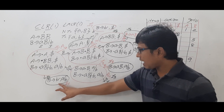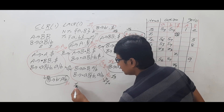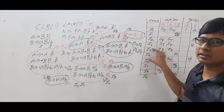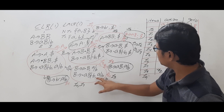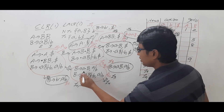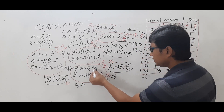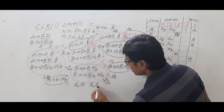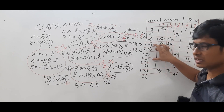Looking at these LR(1) items, I4 and I7 have the same production but different lookaheads — that is why we took two entries in the CLR(1) parsing table. Similarly, I3 and I6 have the same productions but different lookaheads: in I3 the lookahead is a or b, while in I6 the lookahead is dollar. So CLR(1) keeps them as separate entries.